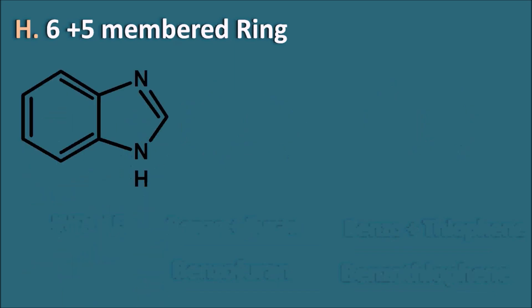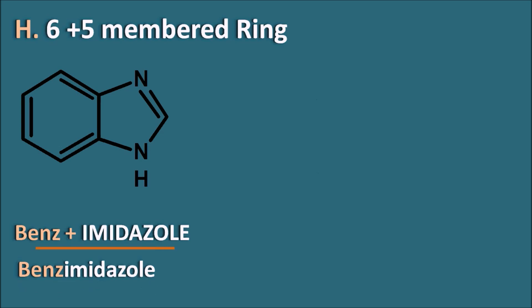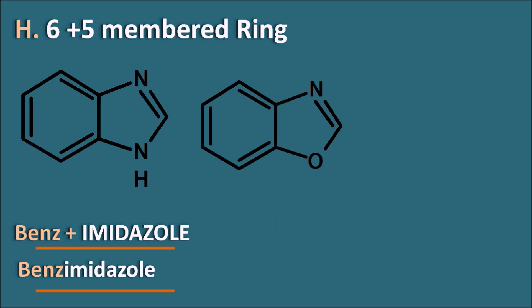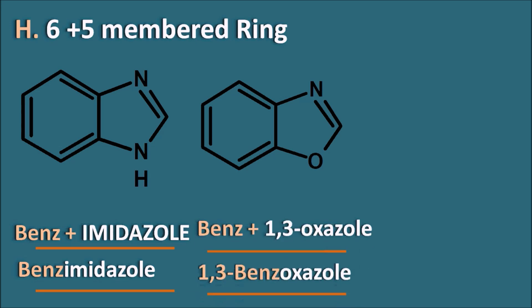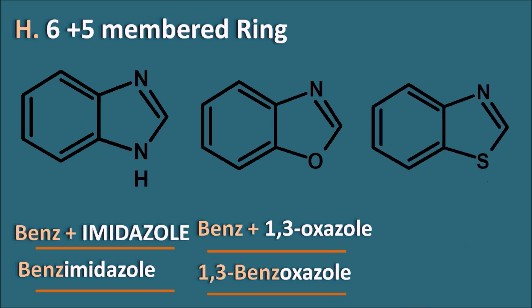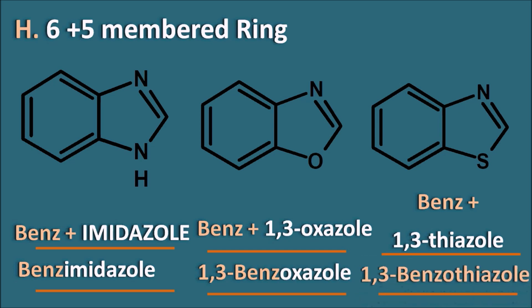Now let us check another example: 6+5-membered ring systems with two heteroatoms. The heterocyclic ring system here is imidazole attached to benzene, so benz + imidazole gives benzimidazole. We have not used 'o' because it is not easy to pronounce, so it is simplified as benzimidazole. Similarly, benzene with oxazole gives 1,3-benzoxazole, and with 1,3-thiazole gives 1,3-benzothiazole.